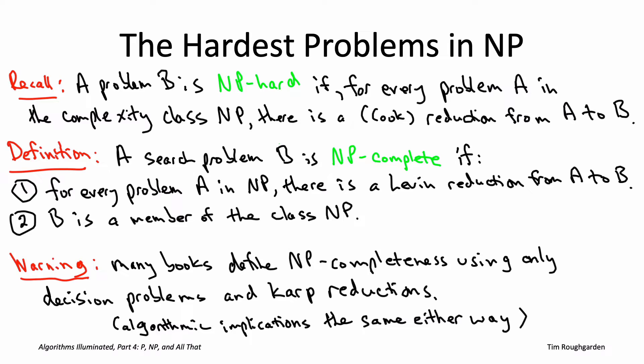This definition of an NP-complete problem is one of the most important definitions in the entire history of computer science. You will, if you look in some books, see a slightly different definition of NP-completeness — don't get confused. What we're working with here is search problems, where an algorithm hands back a feasible solution when one exists, and Levin reductions. In many books, they use decision problems rather than search problems — a yes-no problem where you don't have to construct a feasible solution — and then use Karp or many-to-one reductions instead.